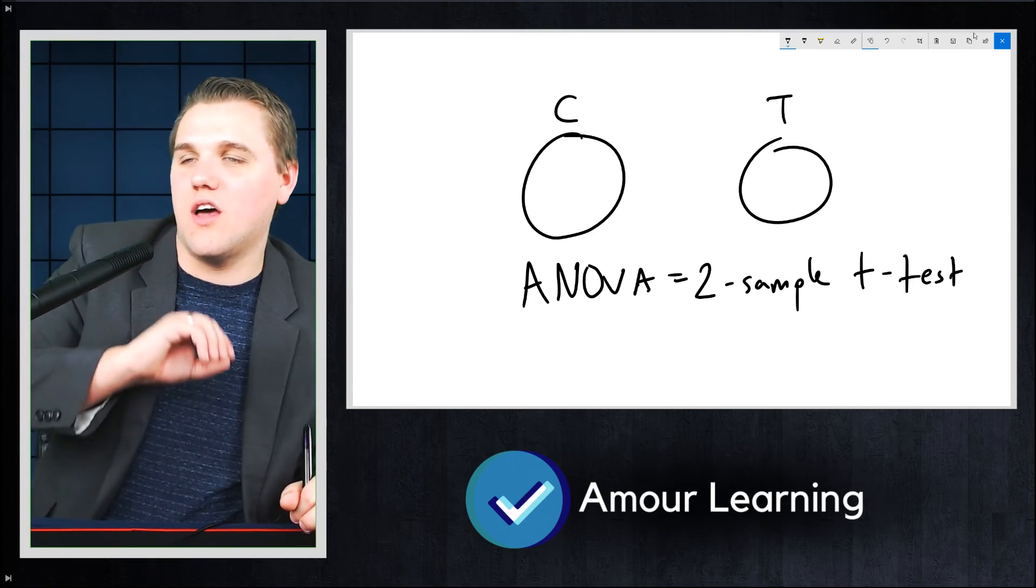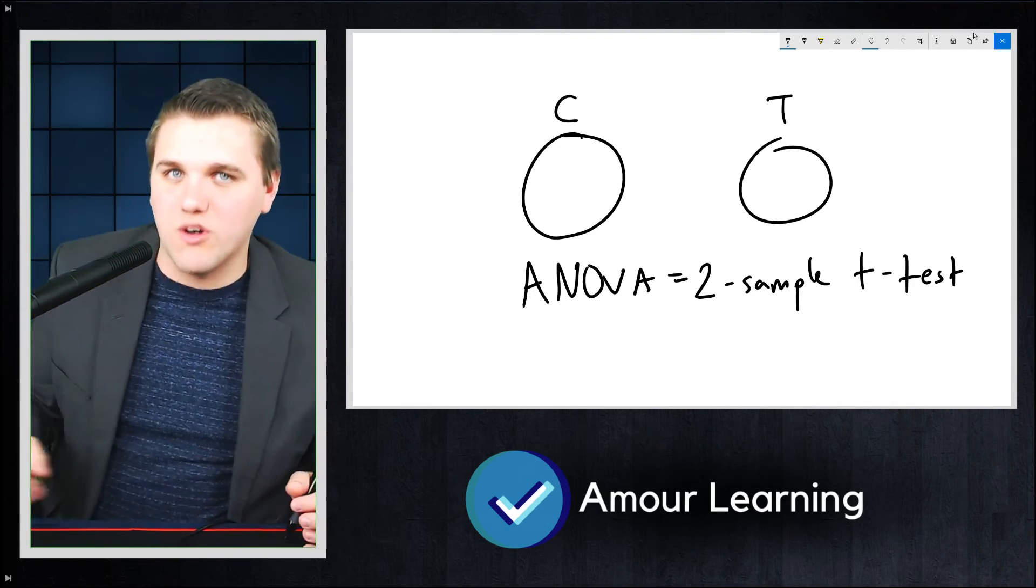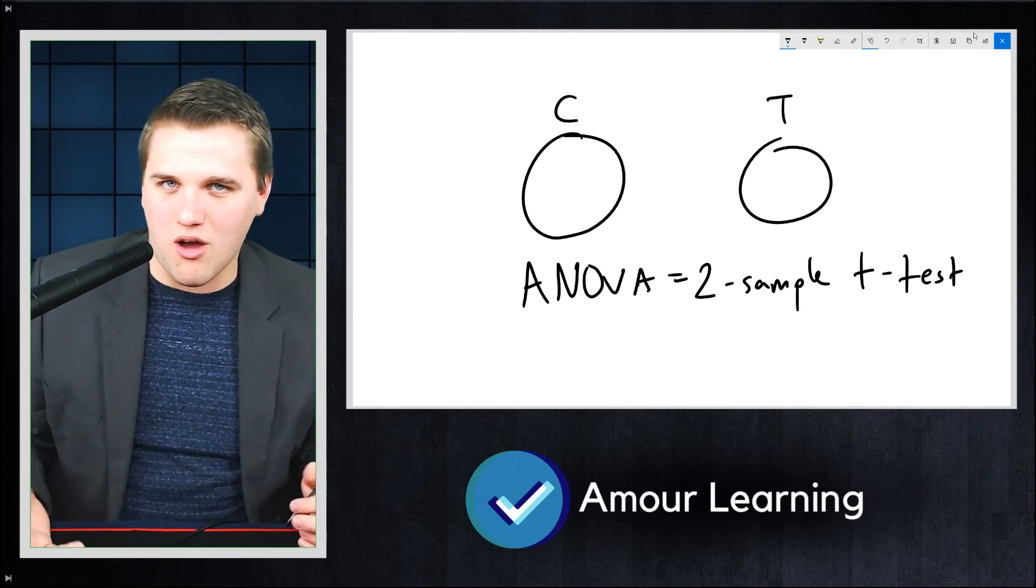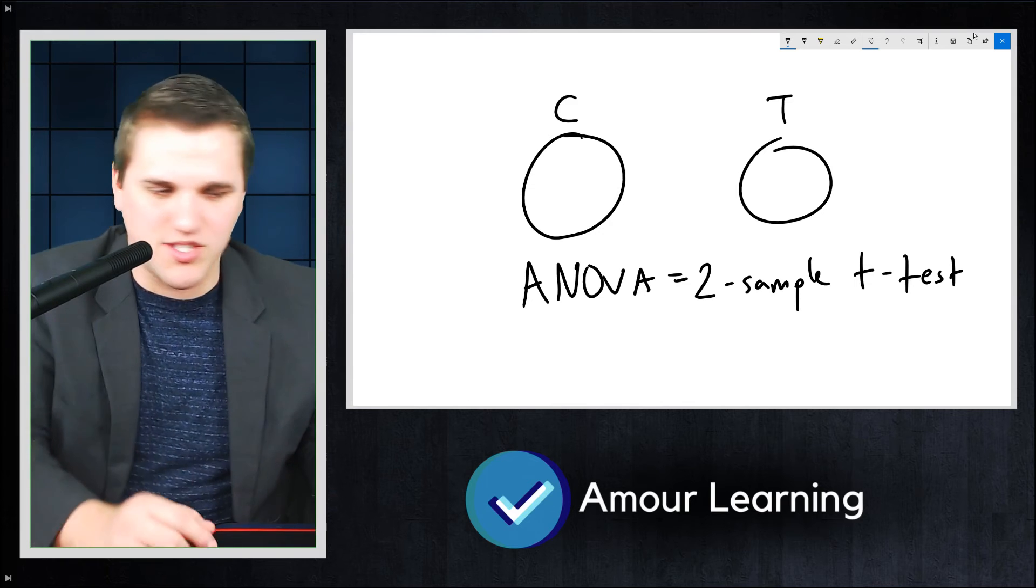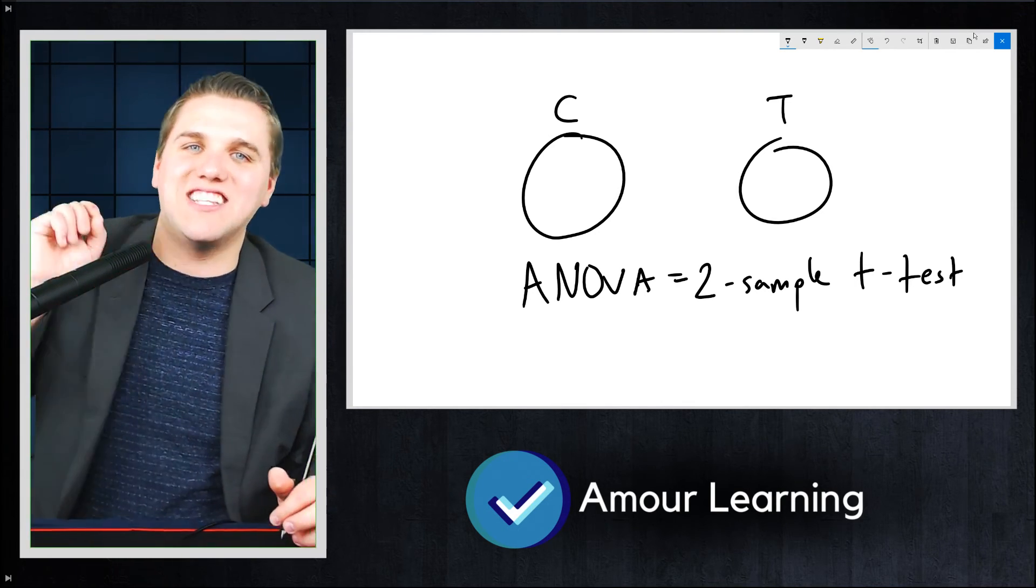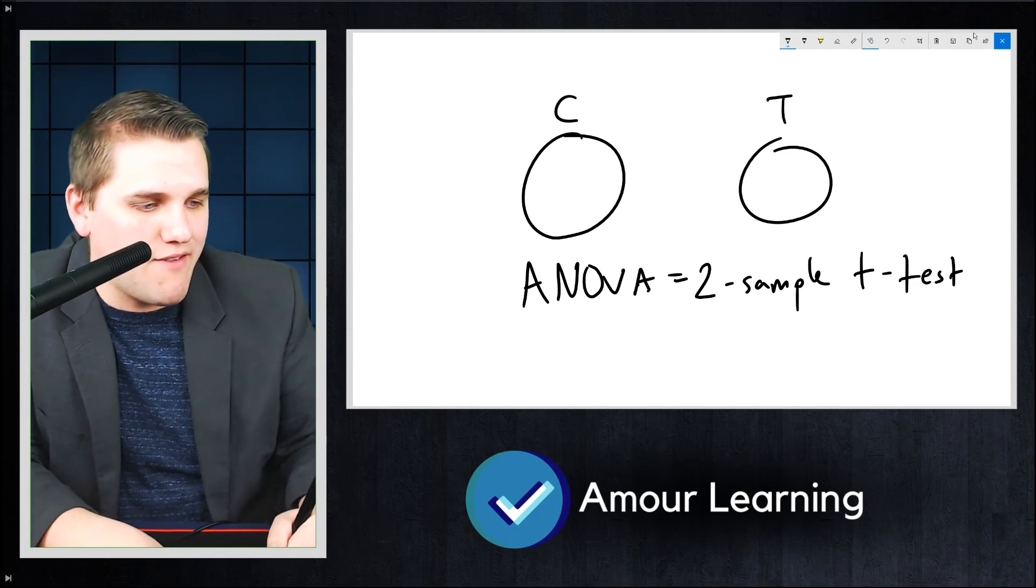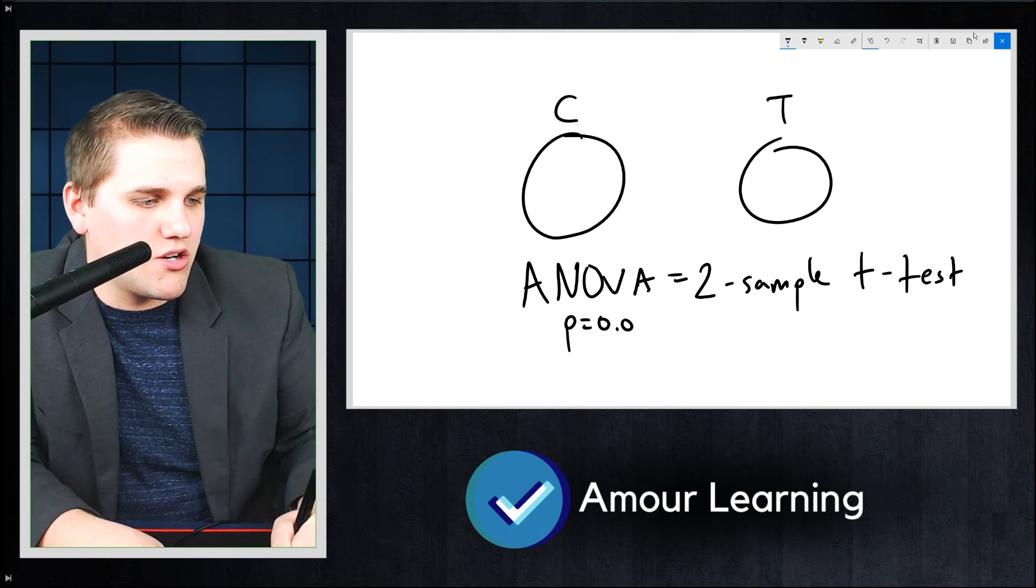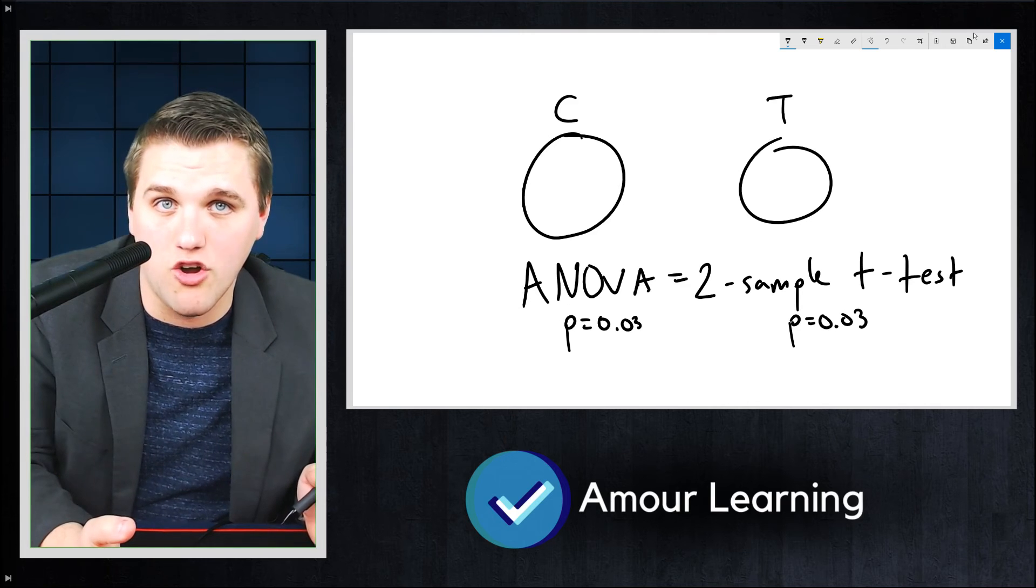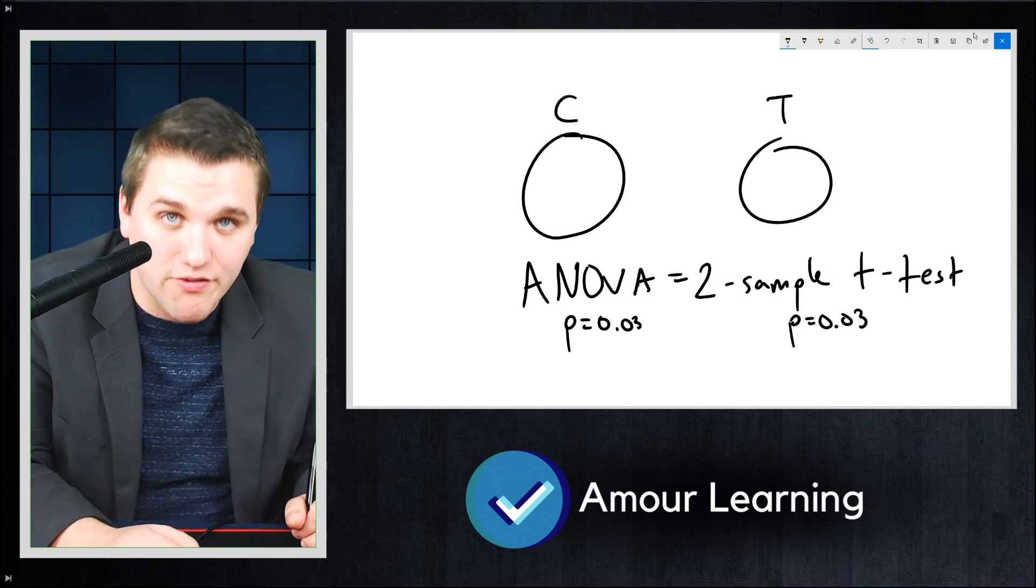ANOVA doesn't use t-scores. They use the f-ratio, which you don't really need to worry too much about in typical statistics classes. But the idea is that the results, the p-values, are going to be exactly identical at the end of both tests. If you get a p-value of 0.03 here, you're going to get a p-value of 0.03 over here, meaning reject the null hypothesis and suggest that these two groups are significantly different from each other.